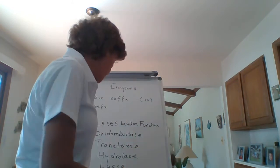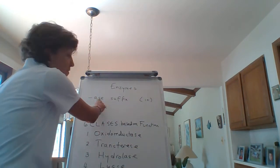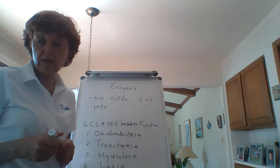How do you name an enzyme? Well, there are two parts to the name. There's the prefix and the suffix. Let's start with the suffix. The suffix of the majority of enzymes is A-S-E. So if you see the suffix A-S-E, that means you're dealing with an enzyme.